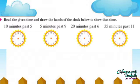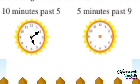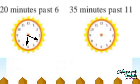Read the given time and draw the hands of the clock to show that time. First clock: ten minutes past five. Next clock: five minutes past nine. Next clock: thirty-five minutes past eleven. Draw the hands accordingly.